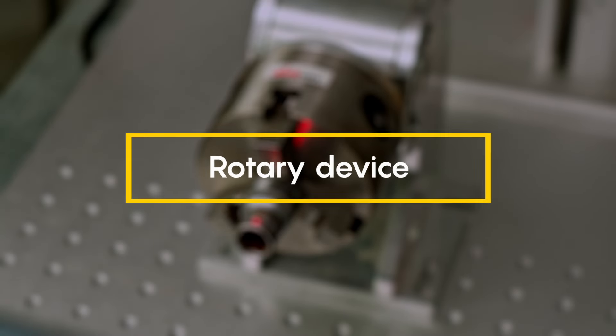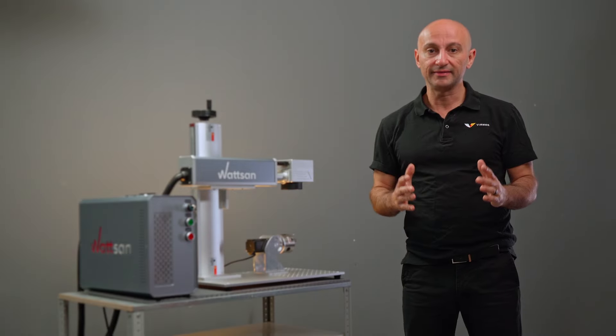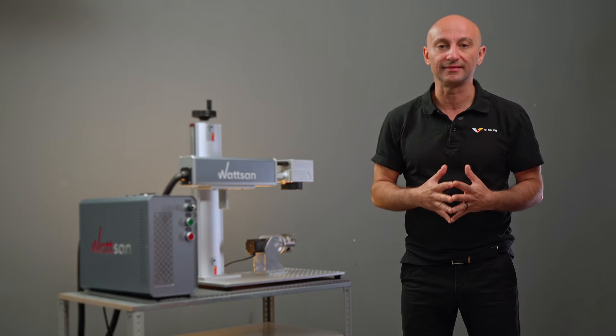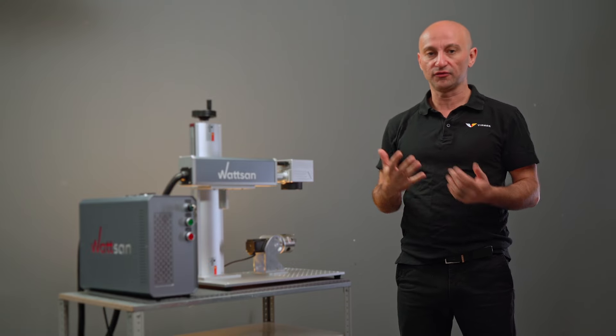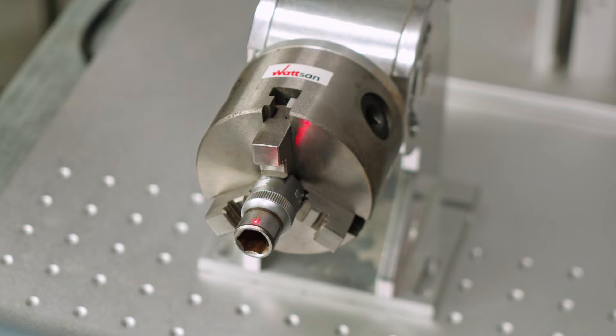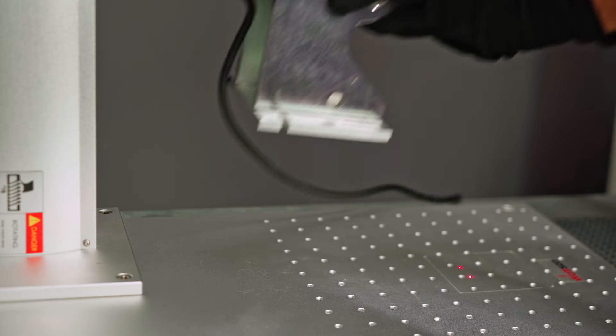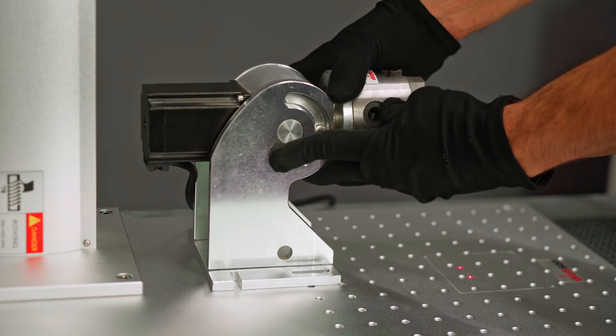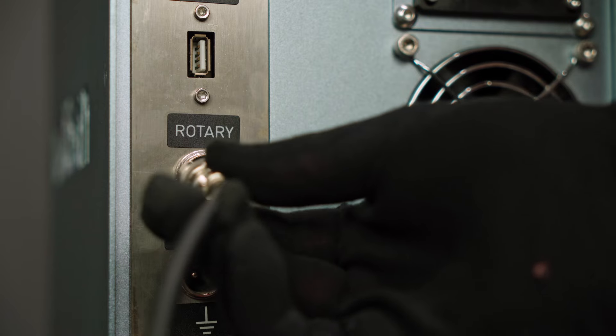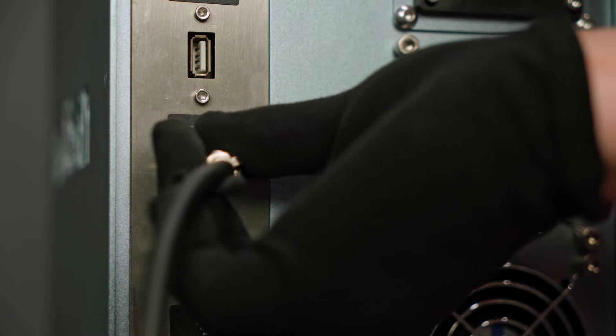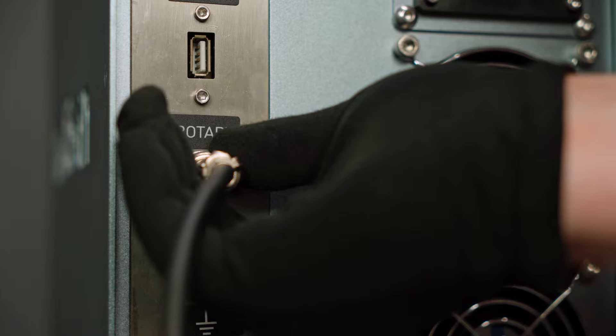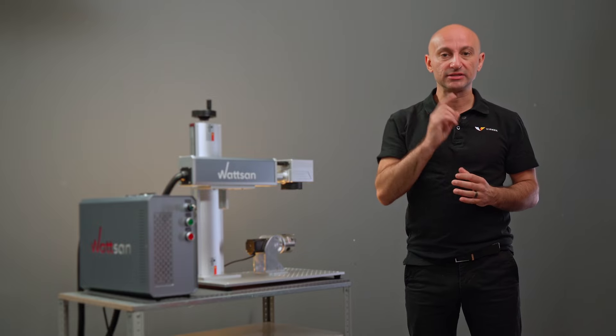Rotary device. The rotary device helps you to work with glasses, rings and anything spherical or cylindrical. There are different types of rotaries, but that's a topic for another video. For now we will use this one. First install it on the laser marking working area. Then connect the rotary access cable to the rotary connector on the back of the laser marker.